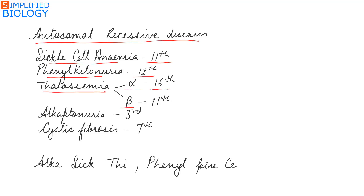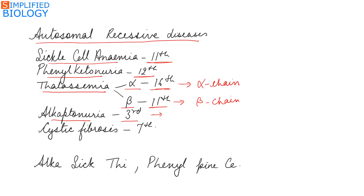Thalassemia is of two types: alpha thalassemia and beta thalassemia. The gene for alpha thalassemia is present on the 16th chromosome, while the gene for beta thalassemia is present on the 11th chromosome. In alpha thalassemia there is a defect in the synthesis of the alpha chain of hemoglobin, while in beta thalassemia there is a defect in the synthesis of the beta chain of hemoglobin. Alkaptonuria — the gene is present on the 3rd chromosome. In this case, alcapton oxidase enzyme is not formed; as a result, alcapton is released in urine, and the disease is detected due to blackening of urine upon exposure to air.